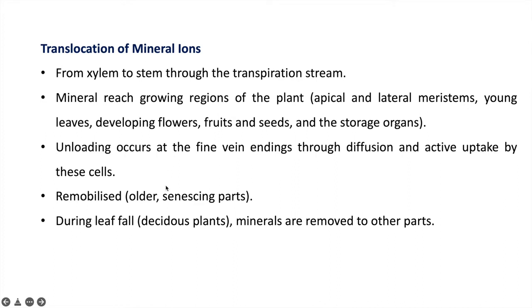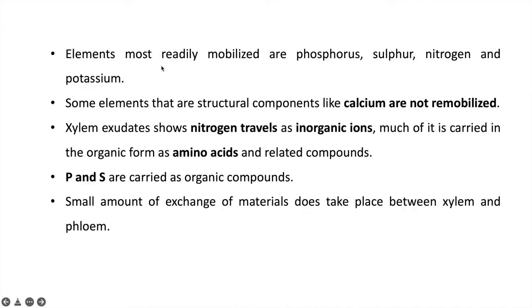Whenever damage occurs in any part of a plant, the plant remobilizes mineral ions to other parts. During leaf fall, minerals are removed from the leaf and transported to other parts of the plant. Some elements easily mobilize in the plant system, such as phosphorus, sulfur, nitrogen, and potassium. But elements that form structural components, such as calcium, once deposited, are not remobilized. Xylem exudate also shows that nitrogen travels in the form of inorganic ions, but mostly in the form of organic compounds such as amino acids. Phosphorus and sulfur also travel as organic compounds, and sometimes there is exchange of minerals between xylem and phloem.